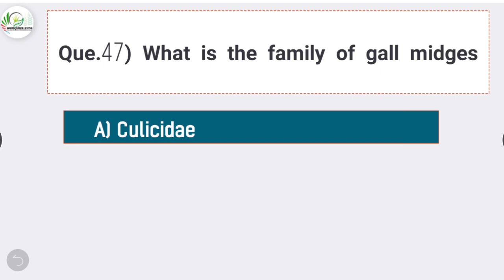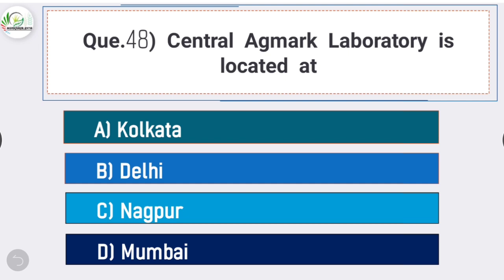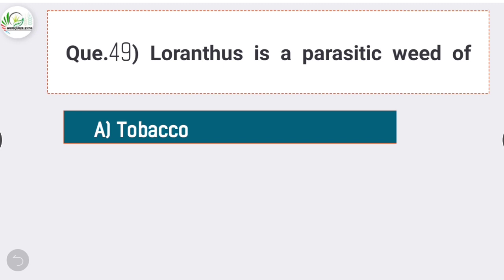Question number forty-seven: what is the family of gall mites? Answer is option C - Eriophyidae. The family of gall mites is Eriophyidae. Question number forty-eight: Central Agromark Laboratory is located at - answer is option C - Nagpur. Central Agromark Laboratory is located at Nagpur.